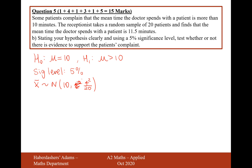So when you're doing a sample and a hypothesis test, you have to divide your variance by the value n, in which case the standard deviation is now 4 divided by the square root of 20. What we're going to test for is the probability of X-bar being more than 11.5.